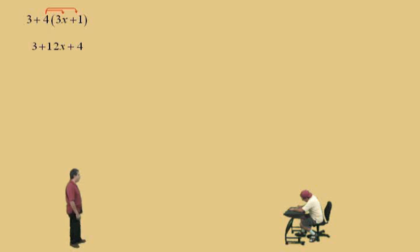Now, combine our like terms, but generally we'll bring our variable first, and what's 3 plus 4? 7. There you go. 12x plus 7.